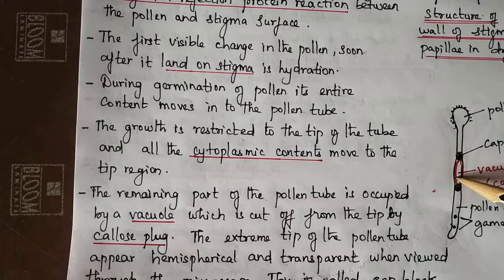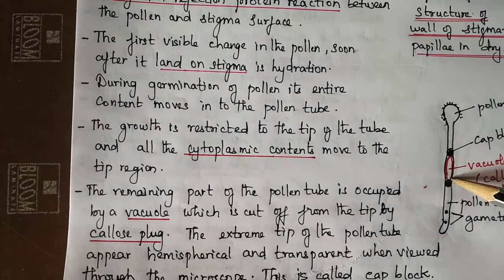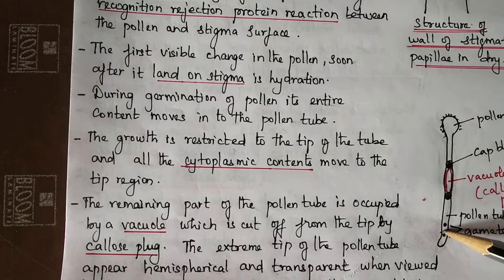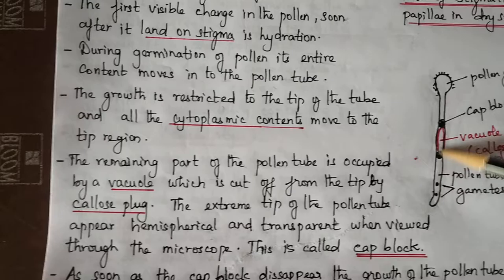The remaining part of the pollen tube is occupied by a vacuole, which is cut off from the tip by the callose plug. The extreme tip of the tube region is hemispherical and transparent.